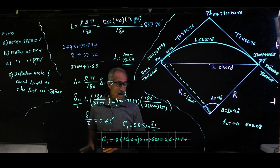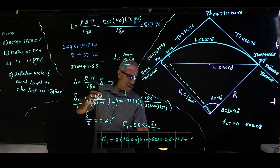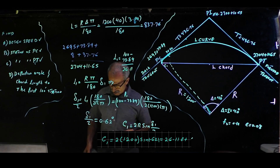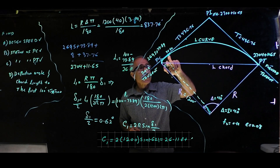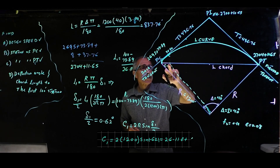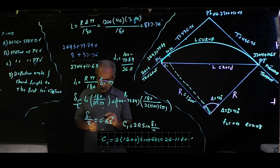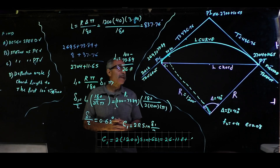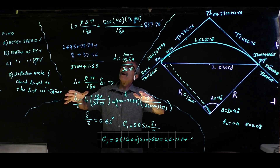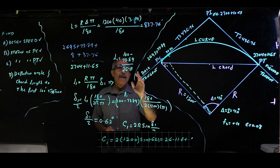C1 comes out to 26.11 feet. Because our curve radius is so large, the arc length from PC to the first station is essentially the same as the chord length — both approximately 26.11 feet. That completes the problem. I hope you liked this — please leave a comment, give a thumbs up, and subscribe. Have a great week and we'll see you in class!